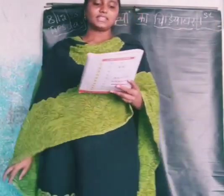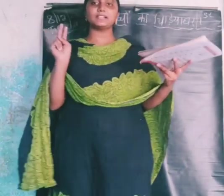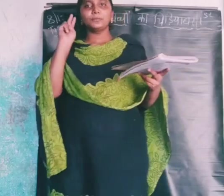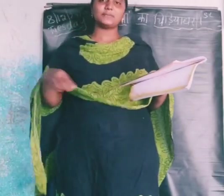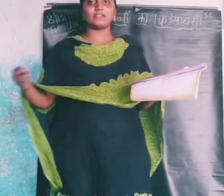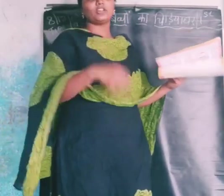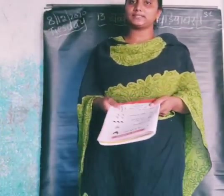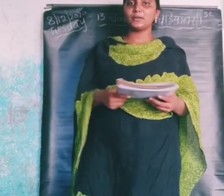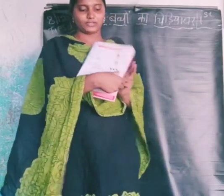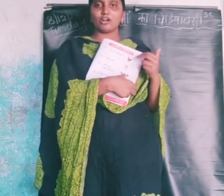Next one. Number 3: aya tither — three birds. Uuske piche piche — following behind. Tither means birds. Three birds are following. You can see there, how many birds are there? 1, 2, 3 birds — tither.